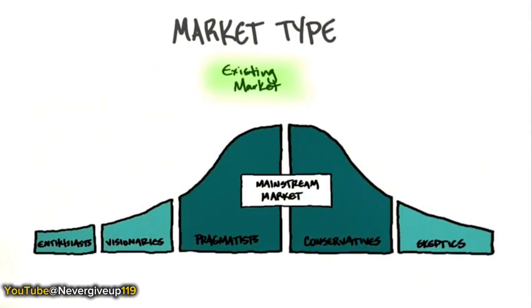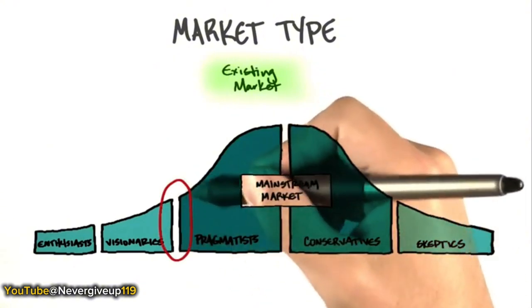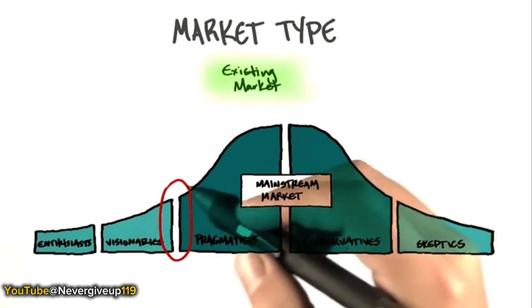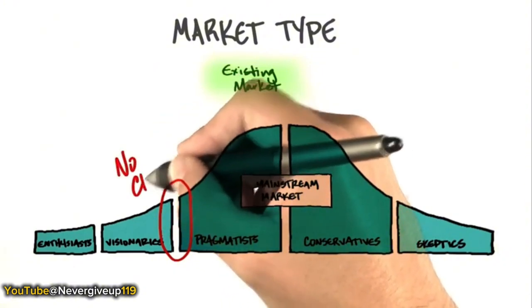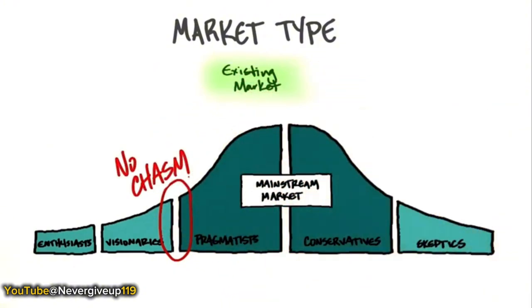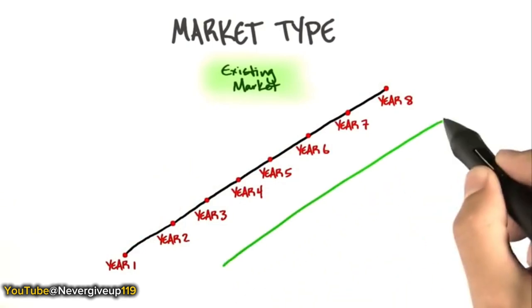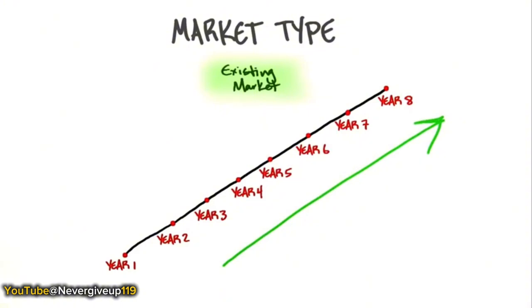One interesting framework for startups is the technology lifecycle adoption curve, popularized by Geoffrey Moore in Crossing the Chasm. Moore postulated there was a gap — a chasm — between visionaries and the mainstream pragmatic and conservative market. In an existing market, that chasm between early adopters and the mainstream is very small or nonexistent. If you're right entering an existing market, your sales curve should look like steady growth — you're taking market share from incumbents from day one. If customers validate that they needed higher performance and you were correct, that's your revenue curve. Congratulations.